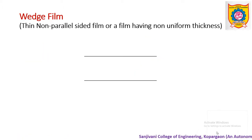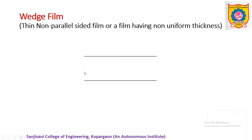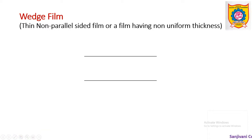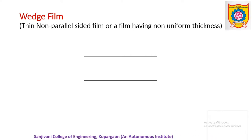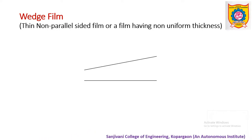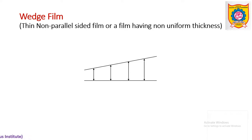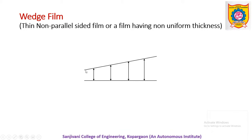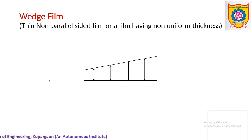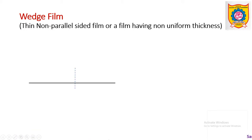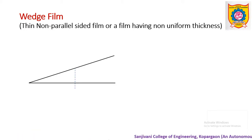In the previous lecture we have seen a parallel film, where the thickness is uniform. Currently we are discussing about wedge film, which is alternatively also called a non-parallel sided film. That means we have to discuss what will happen if the two reflecting surfaces are non-parallel. If this surface line is extended, the two reflecting surfaces will contact and touch each other, and that structure will appear just like a wedge — hence it is also called wedge film.